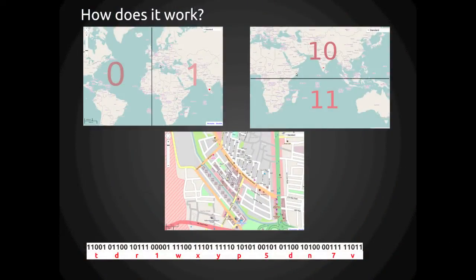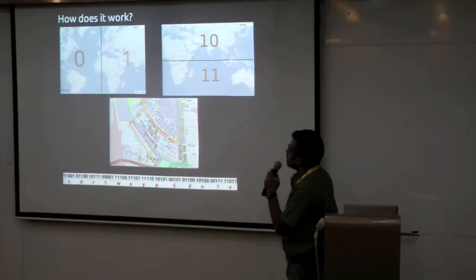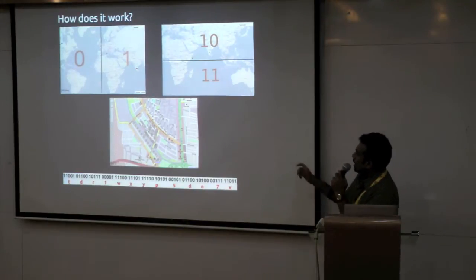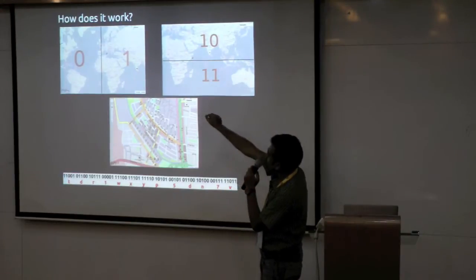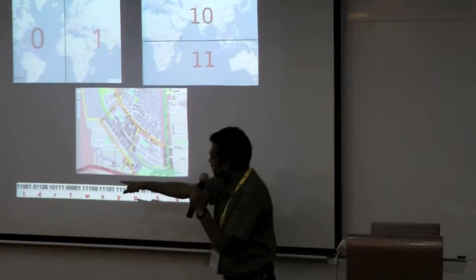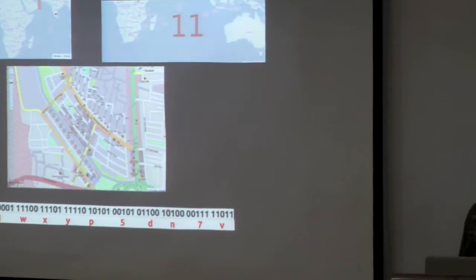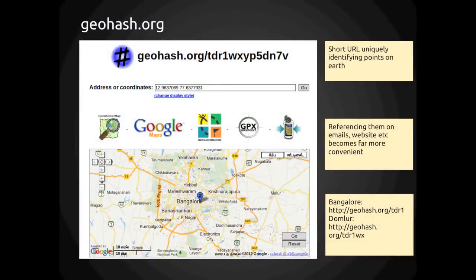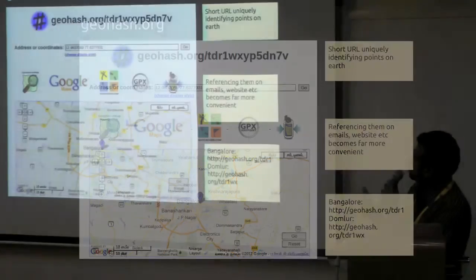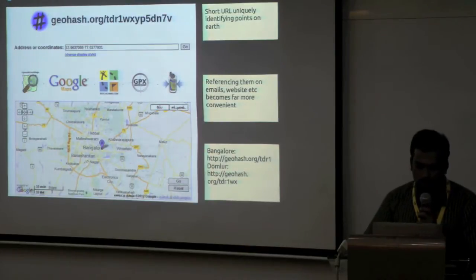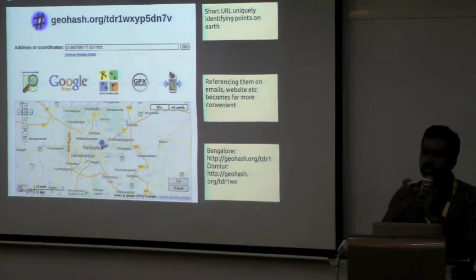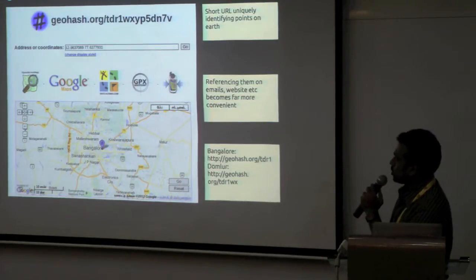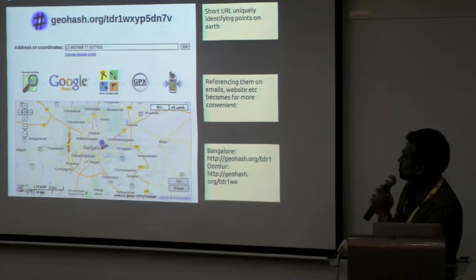How did we get Bangalore as GDR1 or GDR1WX? The process is you keep dividing the map into smaller grids, horizontally and vertically, alternatively, and you keep zooming in. This particular place is marked as a red point. You end up with a very big code in binary, and then you do a base-32 encoding to get the particular code. Geohash.org is one of the reasons why this system was made — when you say geohash.org/TDR1, it takes you to a map centered on that geohash code and gives you links to OSM and Google Maps.